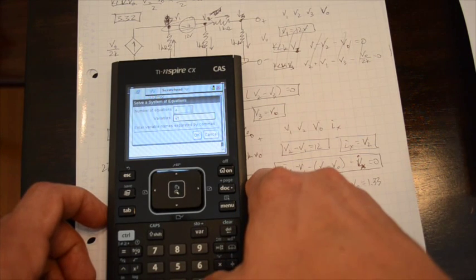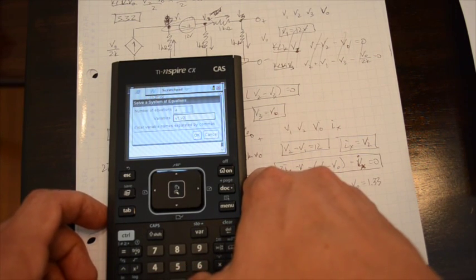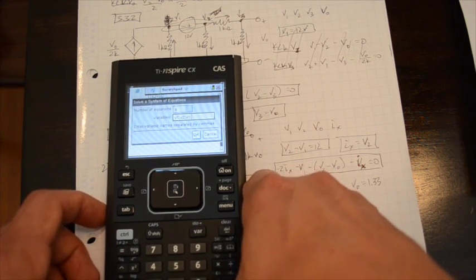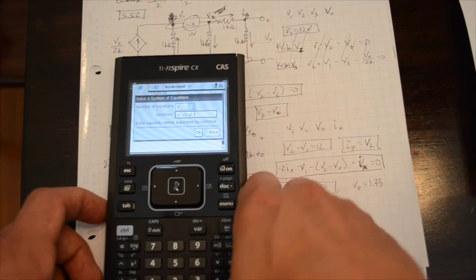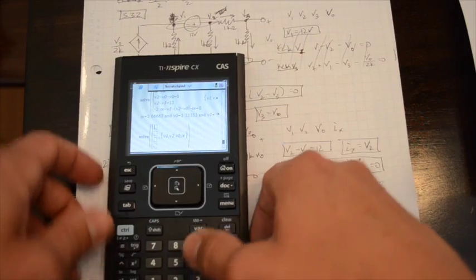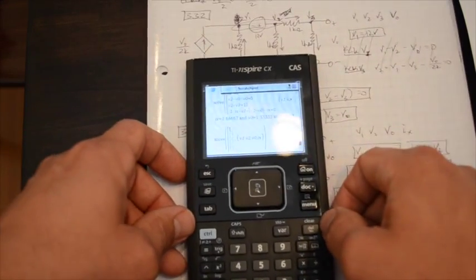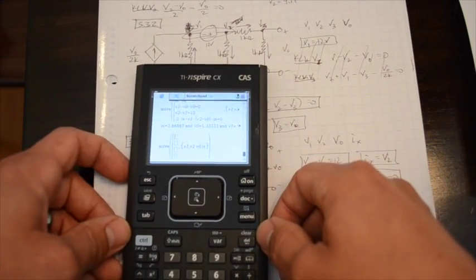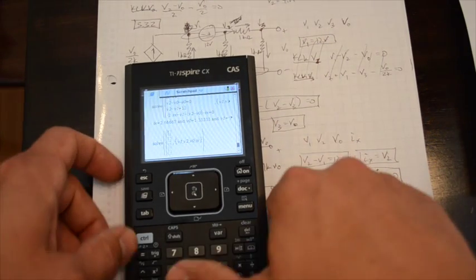V1, V2, V0, IX, and press enter. Then you see it's going to pop up, have everything there. And you're just going to input your equations here.